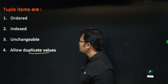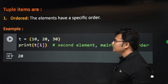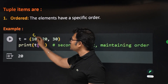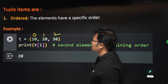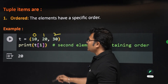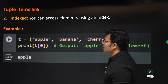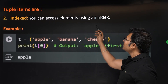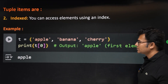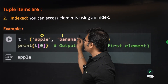When I say ordered, the elements have a specific order. For example, t = (10, 20, 30) has indices 0, 1, 2. When you print t[1], then 20 will be printed. You can access the elements using an index — for example, index 0 is apple, index 1, index 2.